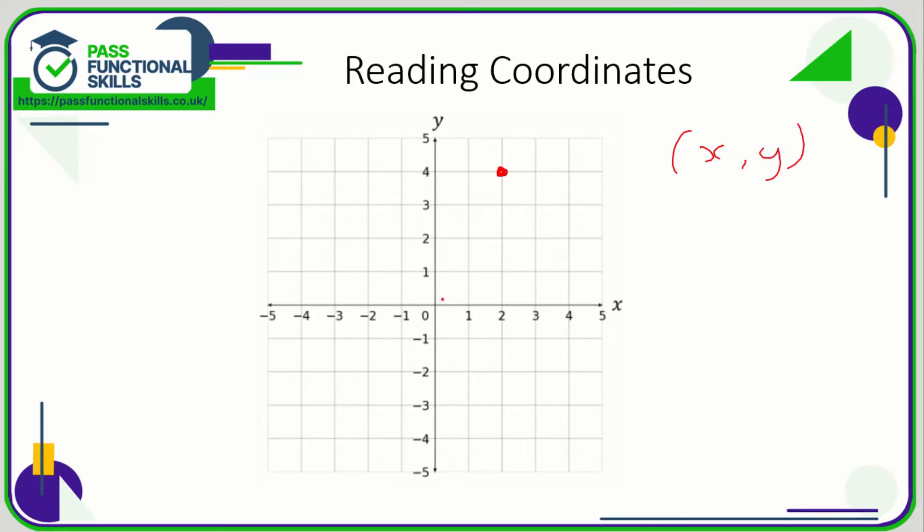What we need to remember is that coordinates go x then y. So we need to work out the horizontal value of this point first of all. So we go across on the x-axis and we can see it's at 2, so the x value is 2. And for y, we're going up to 4. So when I was at school, we would talk about going along the corridor and up the steps. So it's 2 then 4, that's what that point there is.